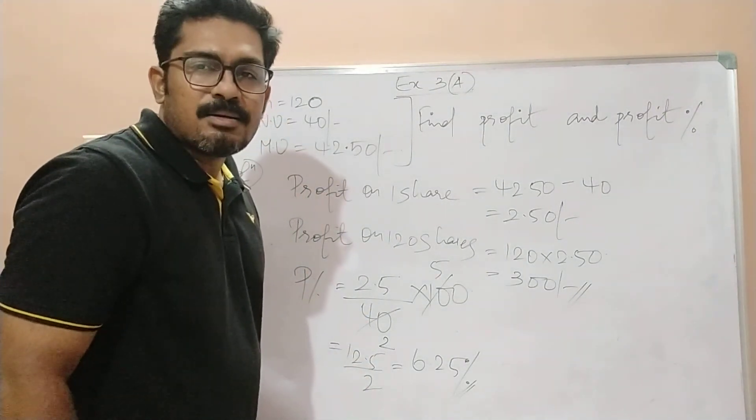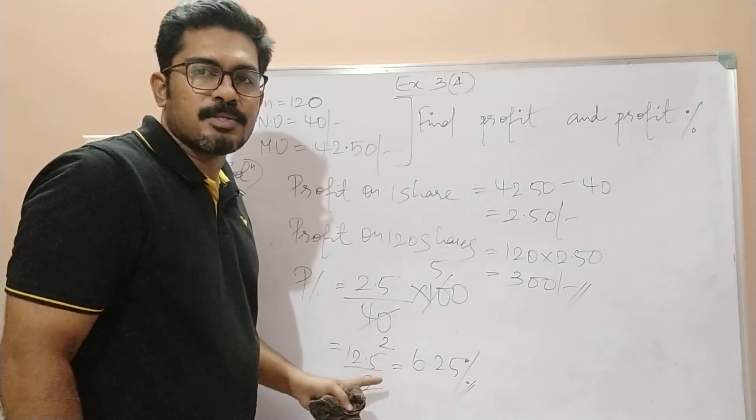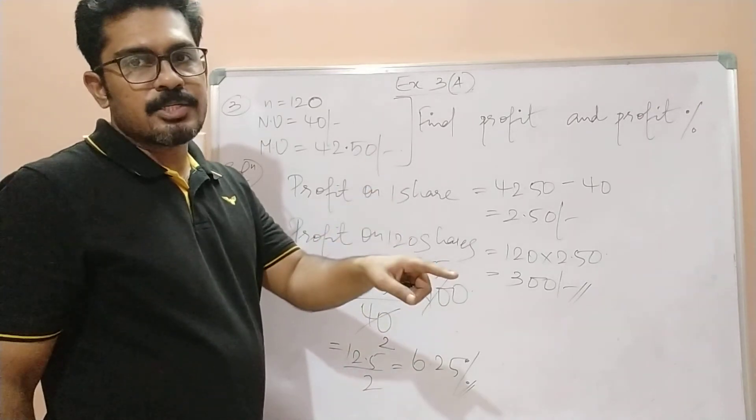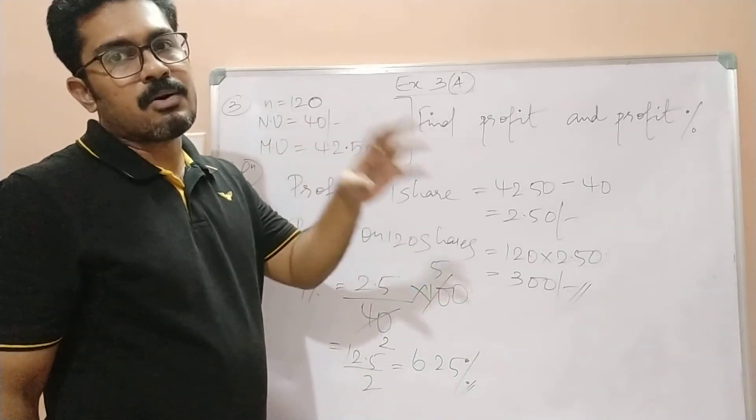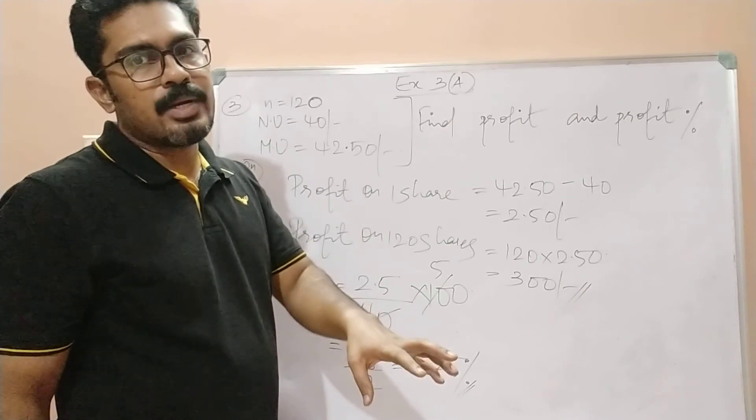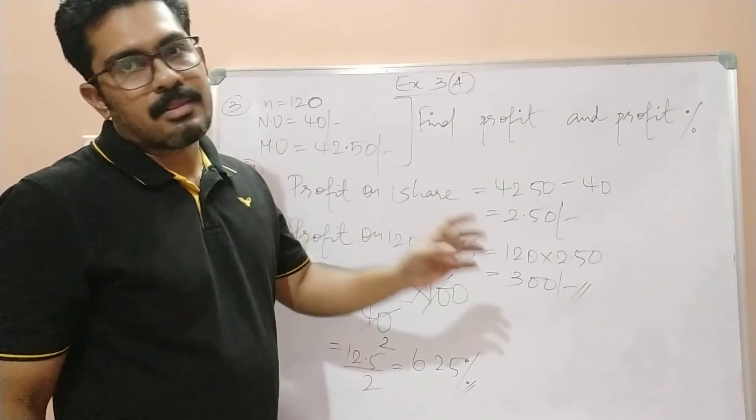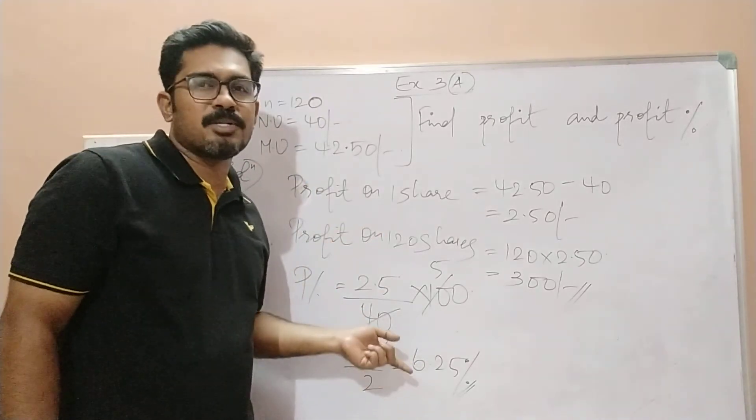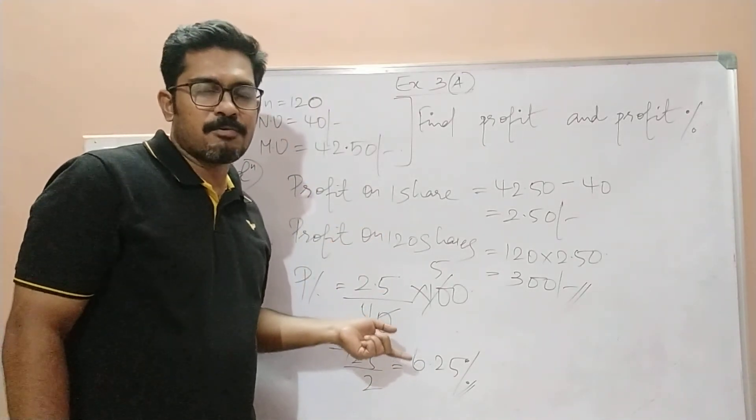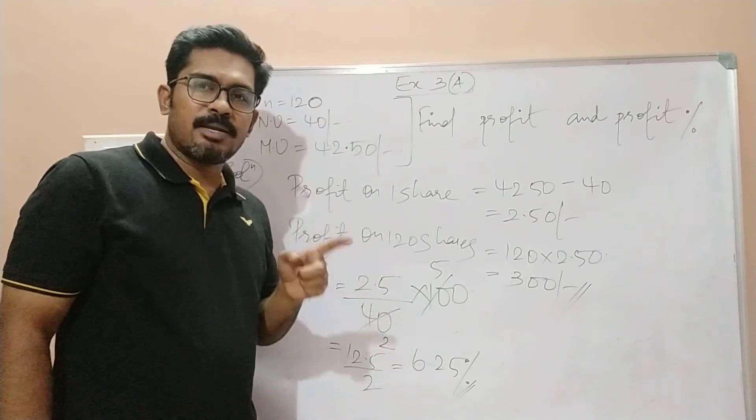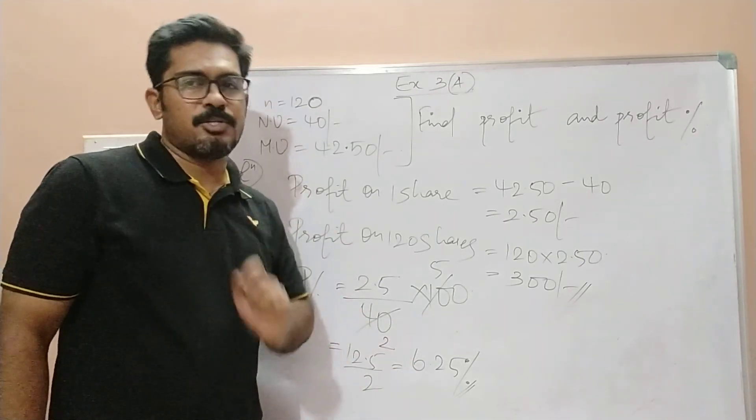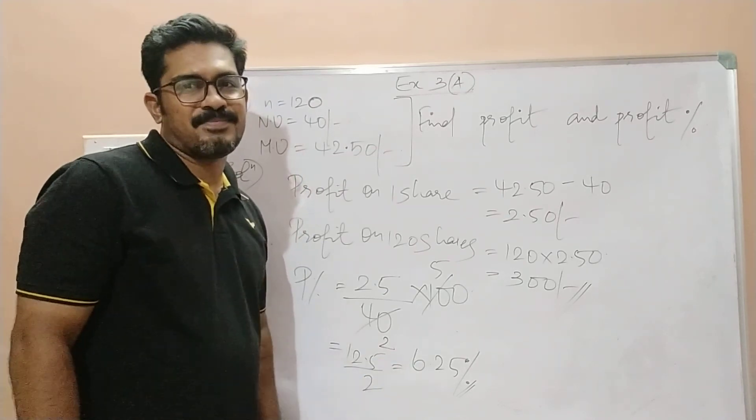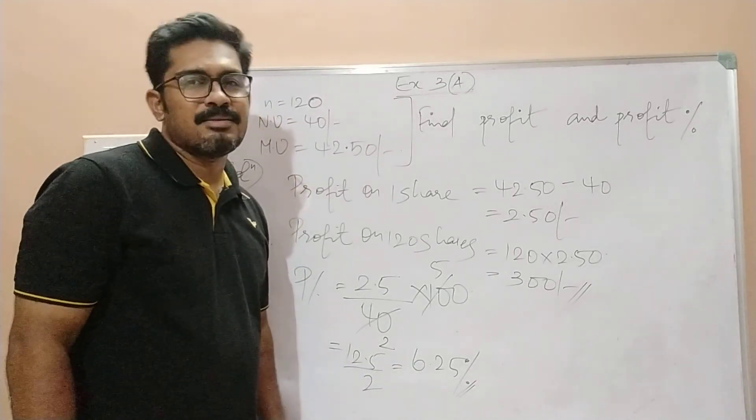I hope this part is clear children. If you want to find the profit percentage on the whole quantity, that is profit made on 120 shares divided by the cost price or the nominal value of all the 120 shares multiplied by 100, then also you will get the same answer, which I won't suggest because this is much more easier. Children, if you have to find the profit percentage, find it on one single share. Your calculation will be very easy and simple. Hope it is clear, thank you so much.